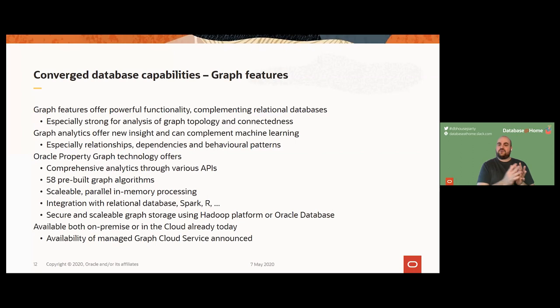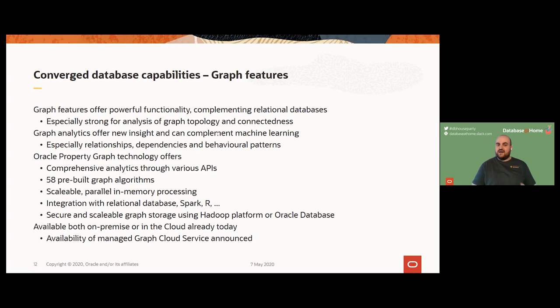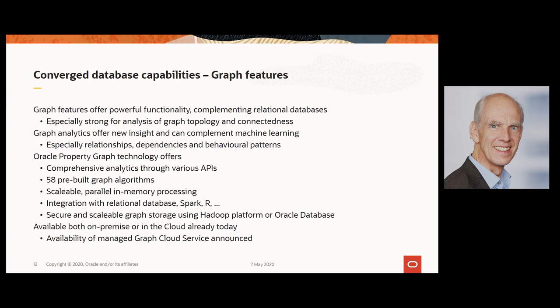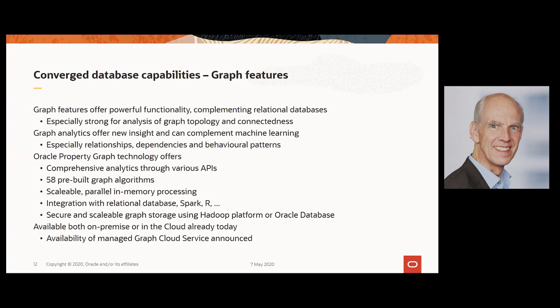It's super scalable — in-memory but also able to work on a cluster with multiple servers growing with your graph. There are integrations with Spark, R, and the relational database for storage and management. And it's not only cloud — it's also on premises since Oracle Database 12c Release 2. On-premises or cloud — Autonomous Database, Database as a Service — it's there, and it's in 12cR2, so there's no reason not to use it.